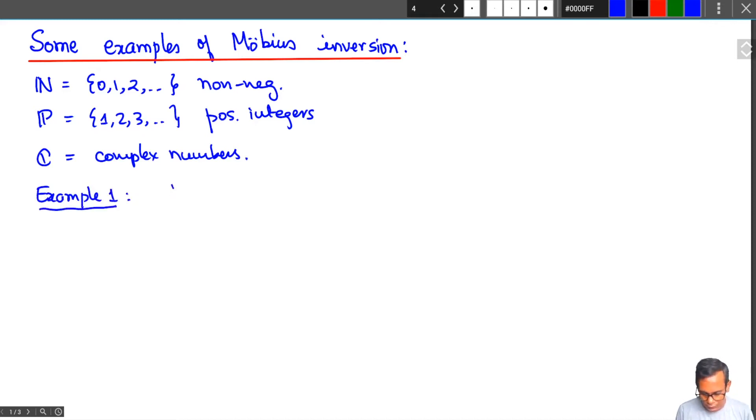Here's the first example of Möbius inversion. Suppose you have two functions f, g from non-negative integers to C, such that g(x) = summation y ≤ x f(y). Then this is equivalent to the formula that f(x) = g(x) - g(x-1).